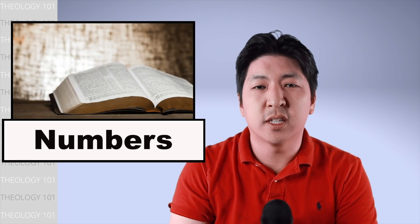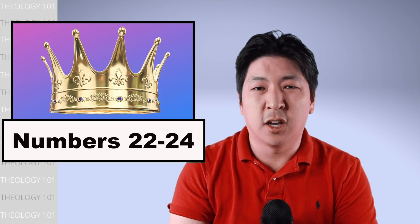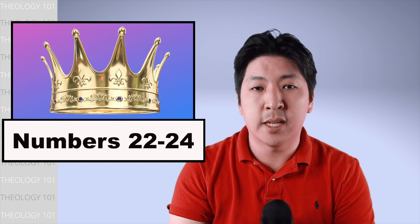Now understanding the overall structure of Numbers, we do see several themes within this book. First, we see the theme of God's protection. There's a story of how the king of Moab, Balak, saw Israel as a threat and wanted to attack them.